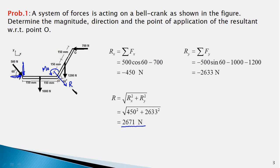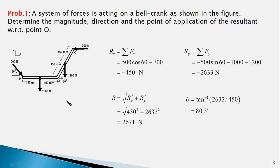Assuming θ is the angle R makes with the x-axis, θ = tan⁻¹(Ry / Rx). Plugging in the values, we get θ = 80.3 degrees. So let us redraw the figure to show the actual direction of the resultant force. This is the correct direction of the force R in the force-couple system — the angle it makes with the x-axis is 80.3 degrees. We have yet to determine the moment of the couple Mo.